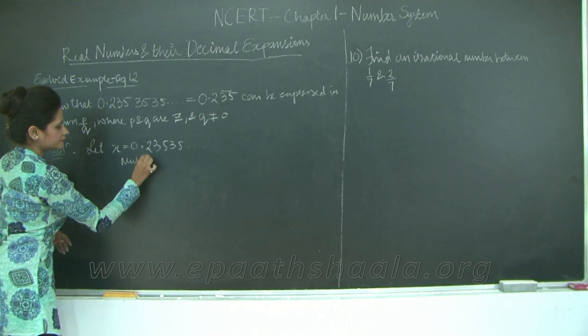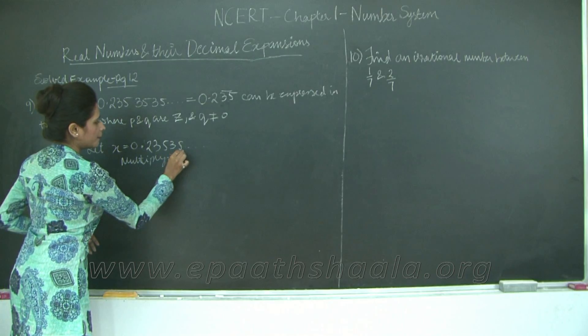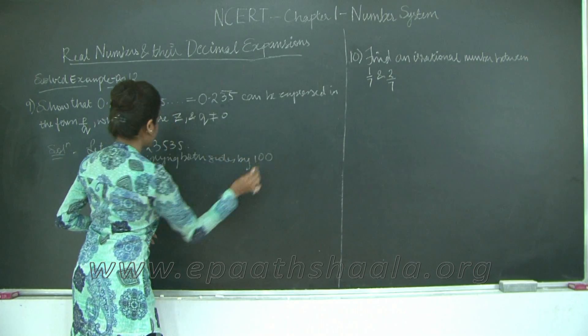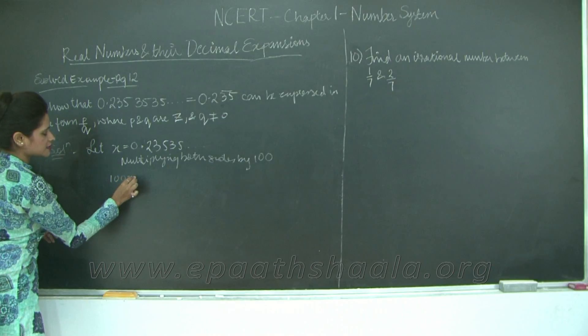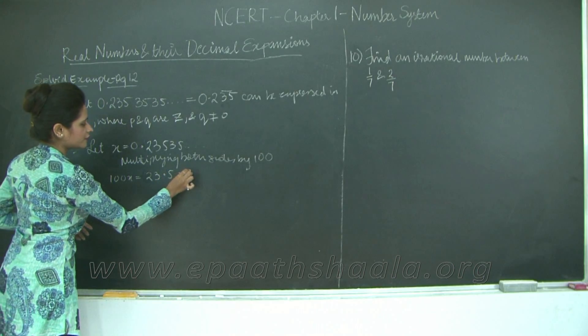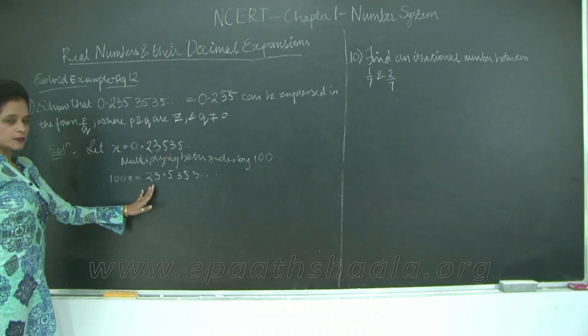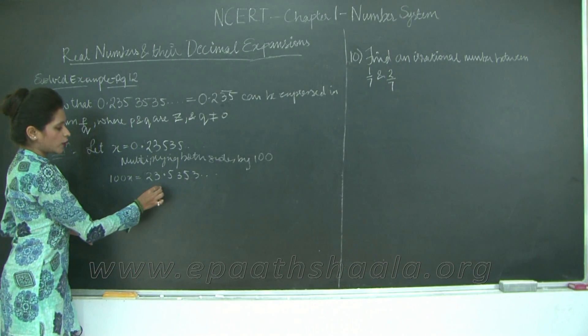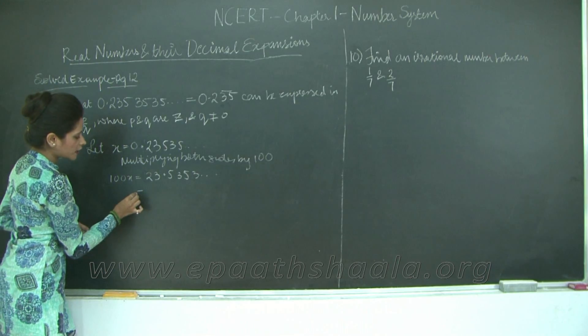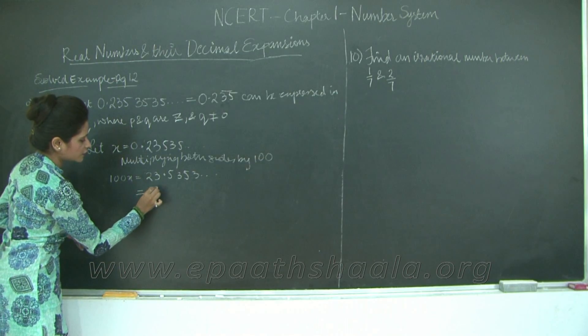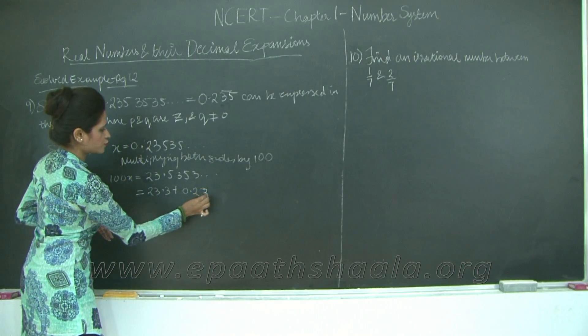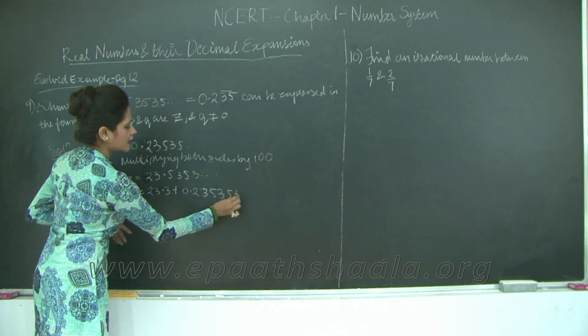Multiplying both sides by 100, what do I get? 100x equals 23.5353 and so on. Now I need to split 23.5353 in such a way that one number should be x, which is 0.2353535 and so on. So how am I going to do this?